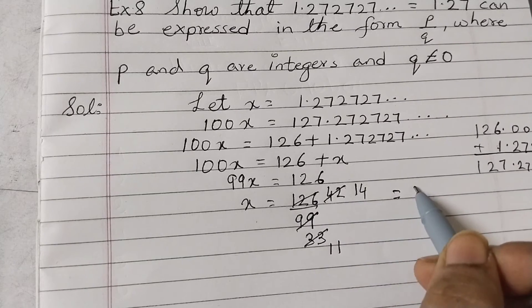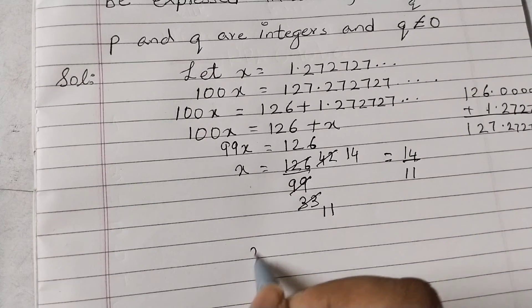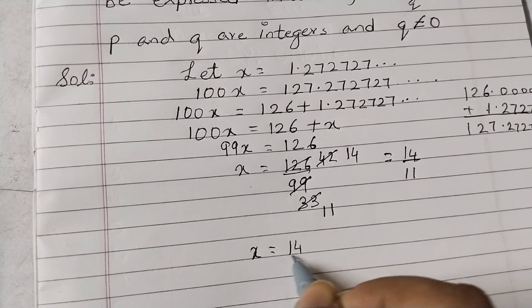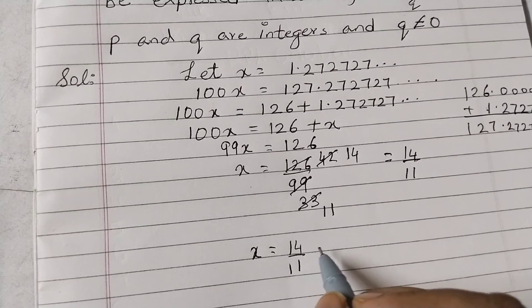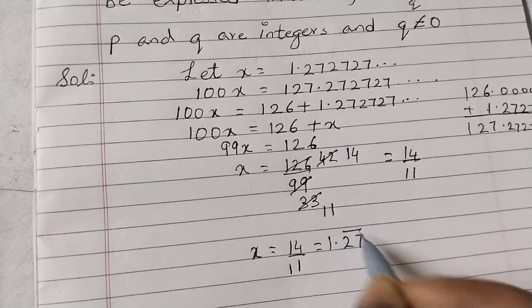So we can write x equals 14 over 11, and 14 over 11 is actually what this is - our 1.27̄.